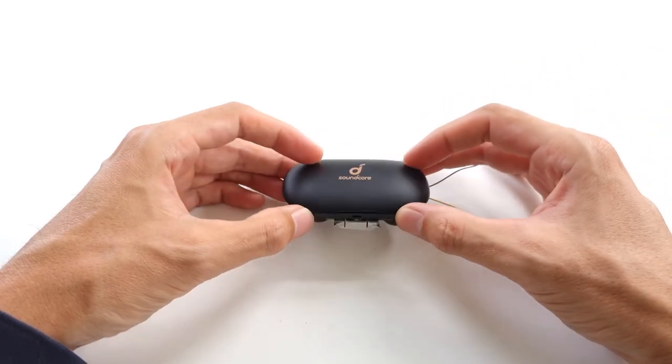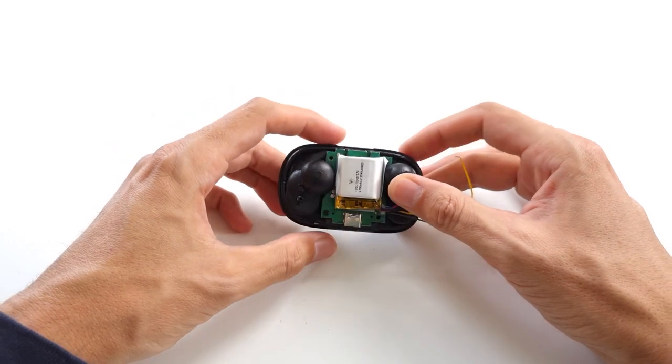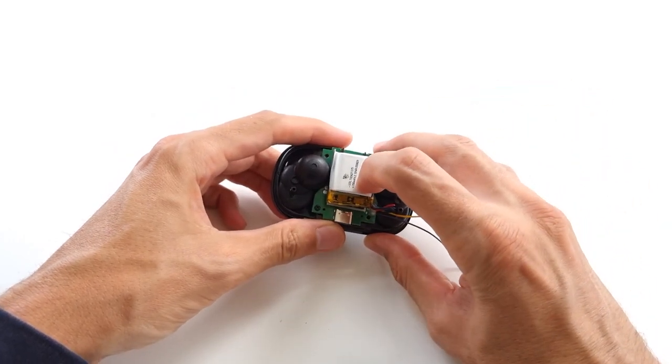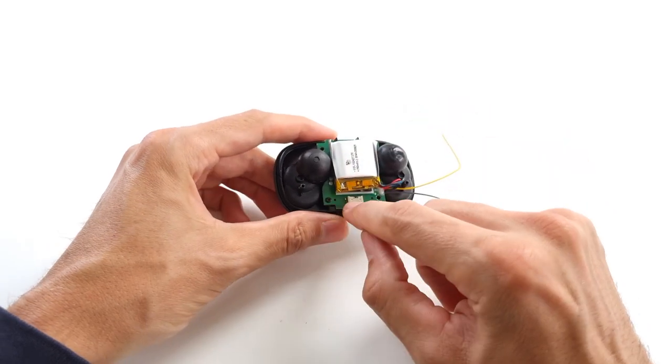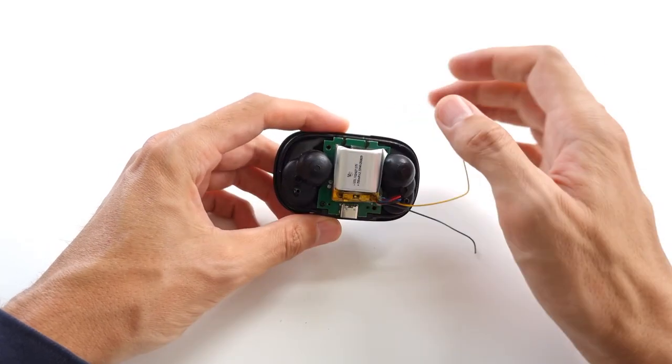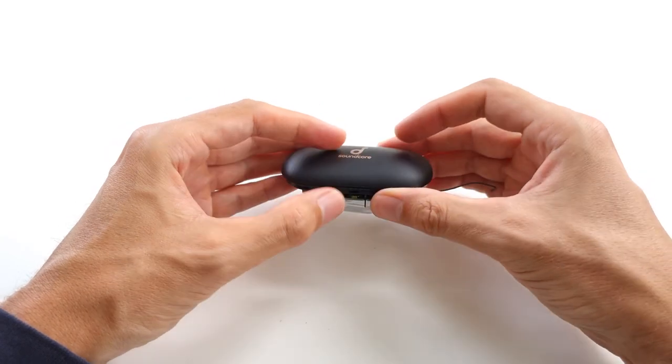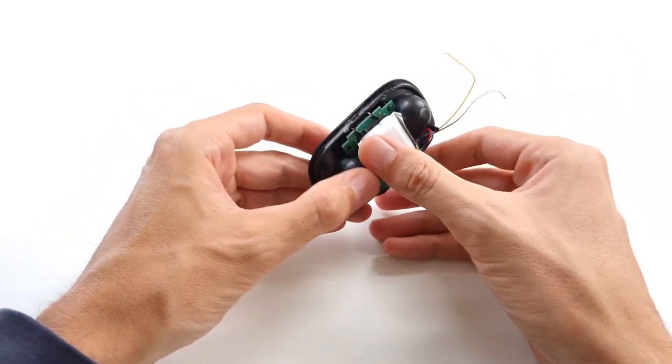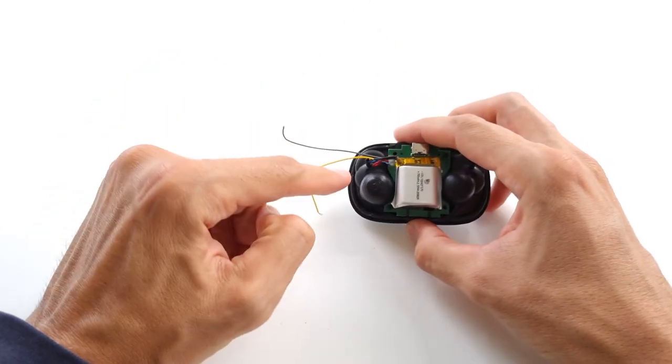This is the box taken apart and as expected there's a lipo battery in here with 700 milliamp hours, a PCB with a charge controller for that battery and also connectors to the earbuds here.